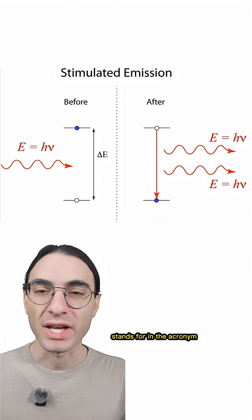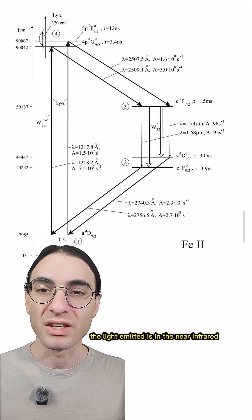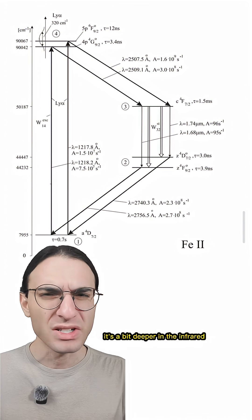In fact, this is what the SE stands for in the acronym laser, stimulated emission. In the case of the oxygen laser, the light emitted is in the near infrared, and for the iron laser, it's a bit deeper in the infrared.